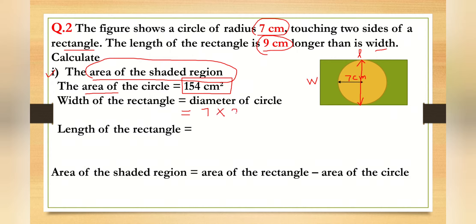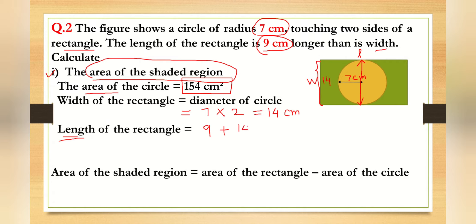Since the radius is seven centimeters, the diameter is seven plus seven, which is 14 centimeters. So the width of the rectangle is 14 centimeters. The length is nine centimeters longer than the width, so length equals nine plus 14, which gives us 23 centimeters.